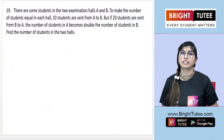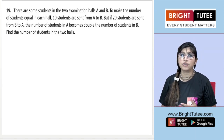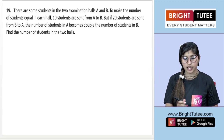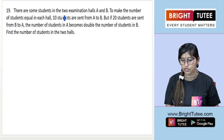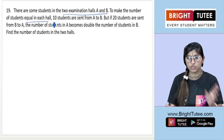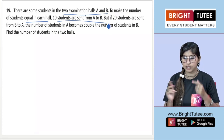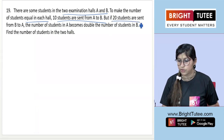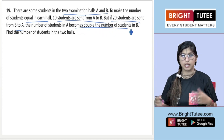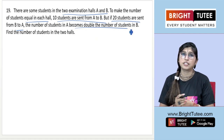We have question 19 of Exercise 3.3, NCERT Exemplar, Chapter 3: Pair of Linear Equations in Two Variables. The question says there are some students in two examination halls A and B. To make the number of students equal in each hall, 10 students are sent from A to B. In the second case, if 20 students are sent from B to A, the number of students in A becomes double the number of students in B.